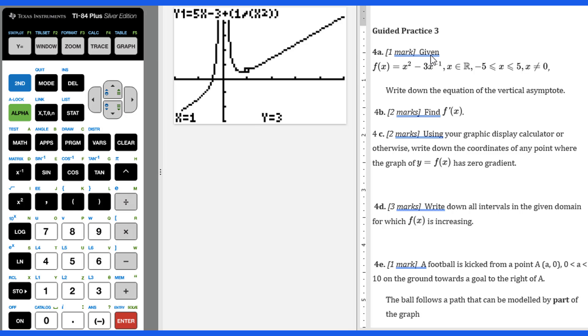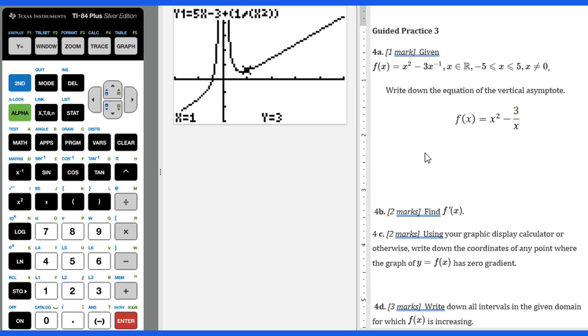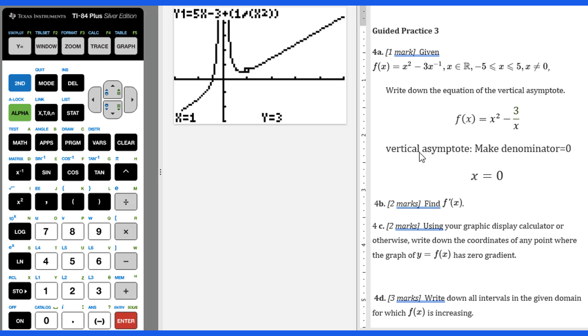Now let's go to Guided Practice 3. Given this function, write down the equation of the vertical asymptote line. We have to change into positive exponents first. After we change, f(x) equals x squared minus three over x. The vertical asymptote line: you make the denominator equal zero, x equals zero.